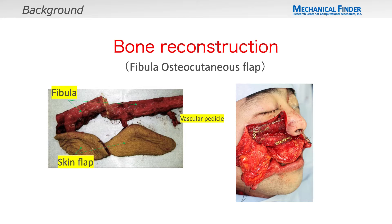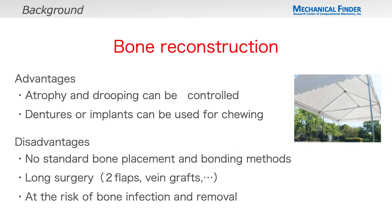Bone reconstruction involves placing bone in the anterior buccal and alveolar region and soft tissue around it. Bone reconstruction can control buccal recession because the bone tissue acts like a tent frame, and chewing is enabled via dentures or implants.